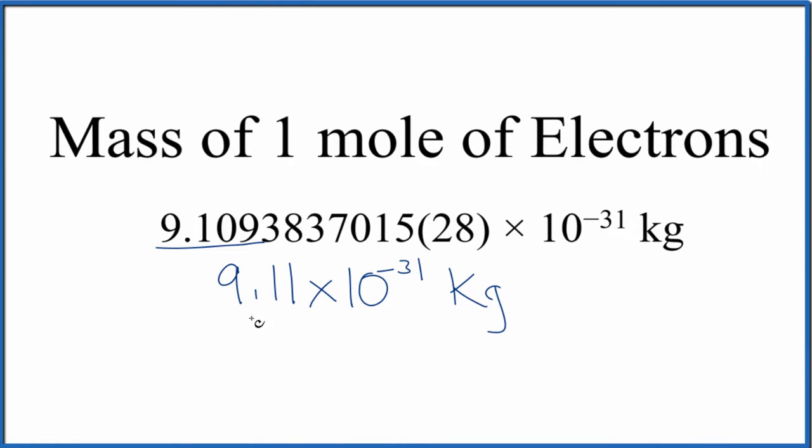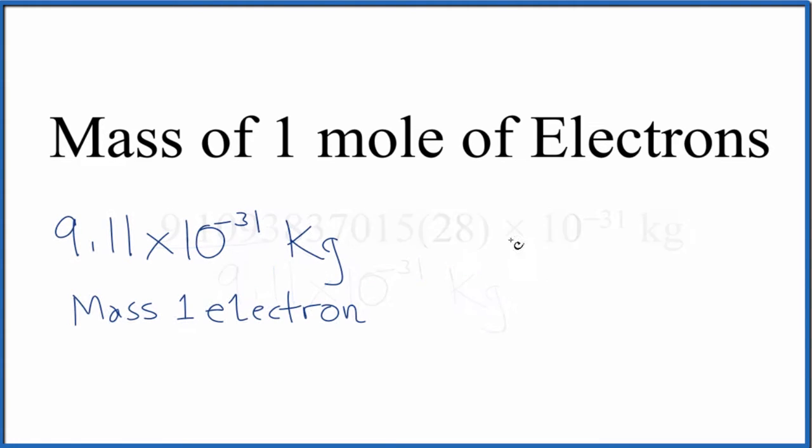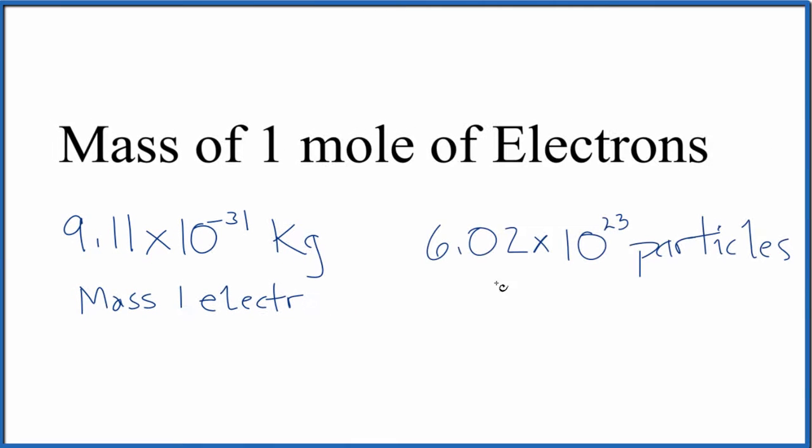We have the mass of one electron, but we're interested in the mass of one mole of electrons. So we need to know how many particles, how many electrons are in one mole. One mole—that's Avogadro's number, 6.02 times 10 to the 23rd particles. Particles can be molecules, atoms, ions, or just electrons. This is the number of electrons in one mole.